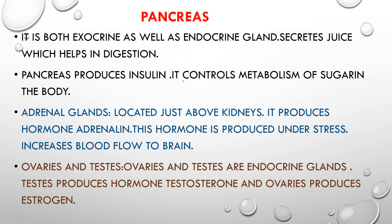Now let's discuss the pancreas. The pancreas is both an endocrine as well as an exocrine gland — it is a dual gland. As an exocrine gland, it secretes pancreatic juice through a duct, which helps in digestion. As an endocrine gland, the pancreas produces insulin along with some other hormones, and insulin controls the metabolism of sugar in the body.